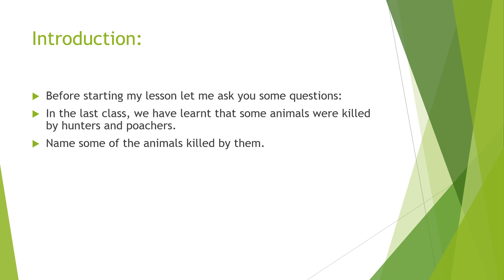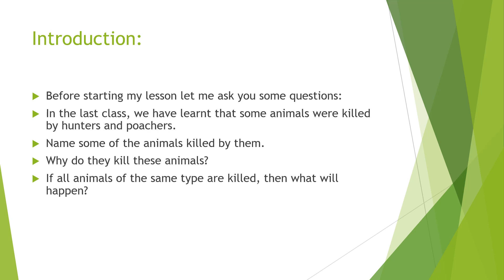If they are killed, why do they kill these animals? Because hunters and poachers are killing them. They kill these animals to get some parts of them — tusks for elephants, skin for tiger, snake, and crocodile, horn for rhinoceros, and musk from musk deer.